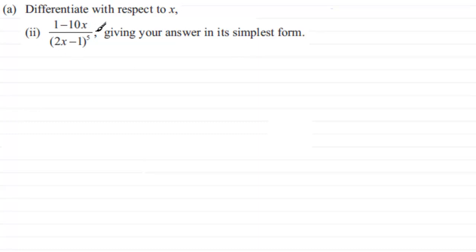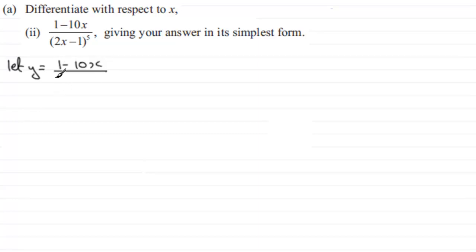First of all, I want to define this. I want to say let y equal this — so we've got (1 minus 10x) all divided by (2x minus 1) to the power 5. This is a typical example where we have two functions of x being divided by one another.